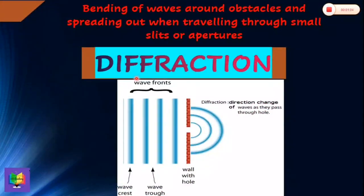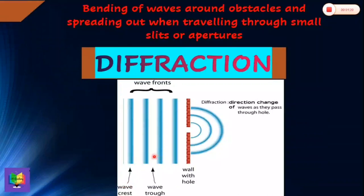Diffraction is defined as the bending of waves around obstacles, or spreading out when traveling through small slits or apertures. Consider these incoming wavefronts — blue lines are wave crests and the gap between two consecutive blue lines indicates a wave trough. After passing through small holes, diffraction takes place, direction changes, and we get the diffraction pattern of the incoming wavefronts.